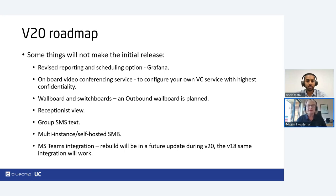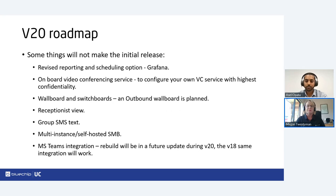On the roadmap — what didn't make the initial release: updated reporting and scheduling of reporting are coming in Update 1 or 2. They've released more detail with the Version 20 launch about a product called Grafana, which will take data and be able to manipulate it. Staff at 3CX have had a firsthand look and are pretty blown away by what it delivers. There's also an onboard video conferencing service for highest security and confidentiality, plus future work on wallboards, switchboards, and potentially an outbound wallboard.